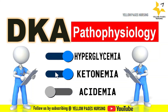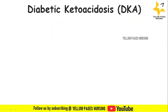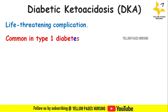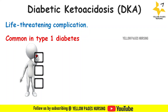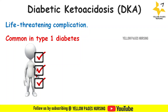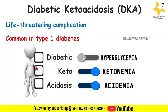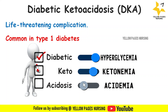Diabetic ketoacidosis is a serious, life-threatening complication of diabetes. It is most common among people with type 1 diabetes, though people with type 2 diabetes can also develop DKA. The main reason why diabetic ketoacidosis develops is when the body doesn't have enough insulin to allow blood sugar into cells for use as energy.